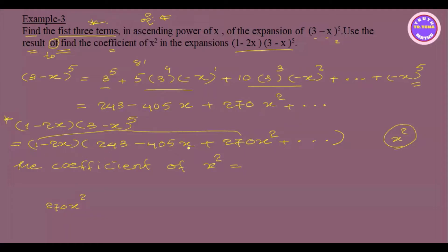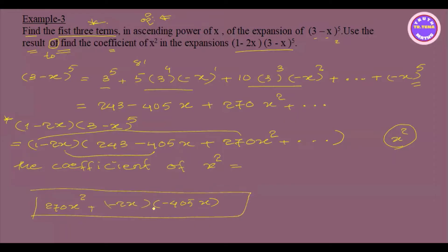Then we will see that 1 times x squared is equal to 0. The 2x squared is equal to 2x. The 2x squared is equal to 0x squared. So we will see that minus 4 of 5 minus 2x squared is equal to 0x squared. Minus 2x minus 4 of 5 is equal to 0x squared. We can see that 0x squared is equal to 0x squared. This is equal to 0x squared. The constant is equal to 0x squared.